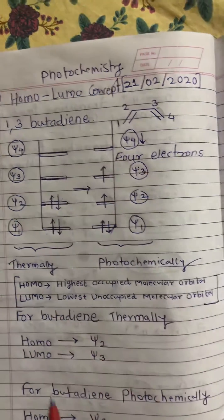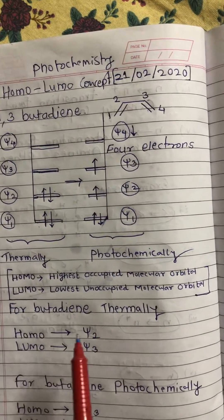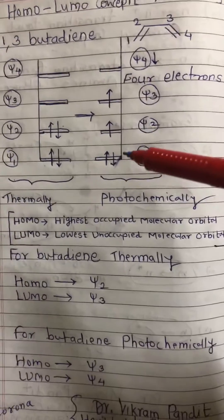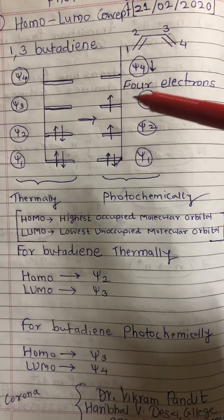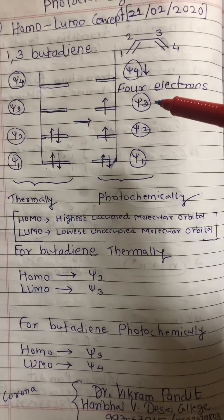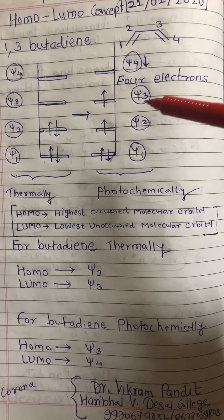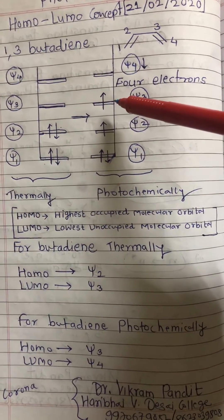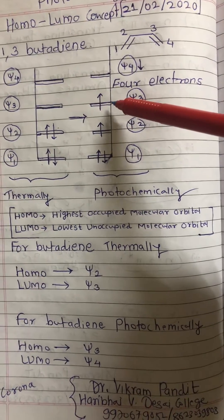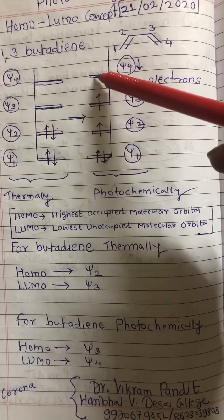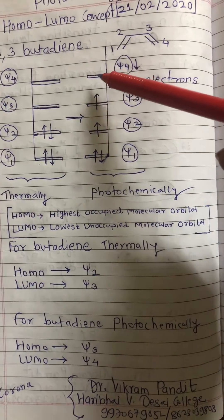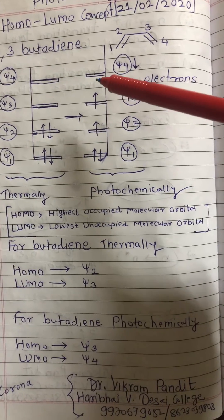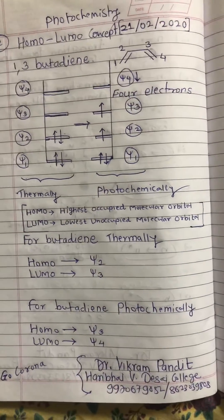So thermally for butadiene, HOMO is ψ2 and LUMO is ψ3. Photochemically, one electron moves into ψ3, so for butadiene photochemically, HOMO is ψ3 — the highest occupied molecular orbital — and ψ4 is the lowest unoccupied molecular orbital. Therefore, for butadiene photochemically, HOMO is ψ3 and LUMO is ψ4.